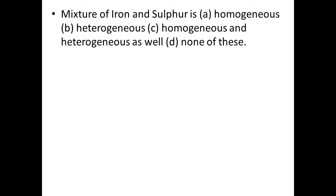MCQ: Mixture of iron and sulphur is — first option homogeneous, second heterogeneous, third homogeneous and heterogeneous both, fourth none of these. Salim Mandan, roll number 15. The correct option is: mixture of iron and sulphur is heterogeneous. Very good, it is heterogeneous.